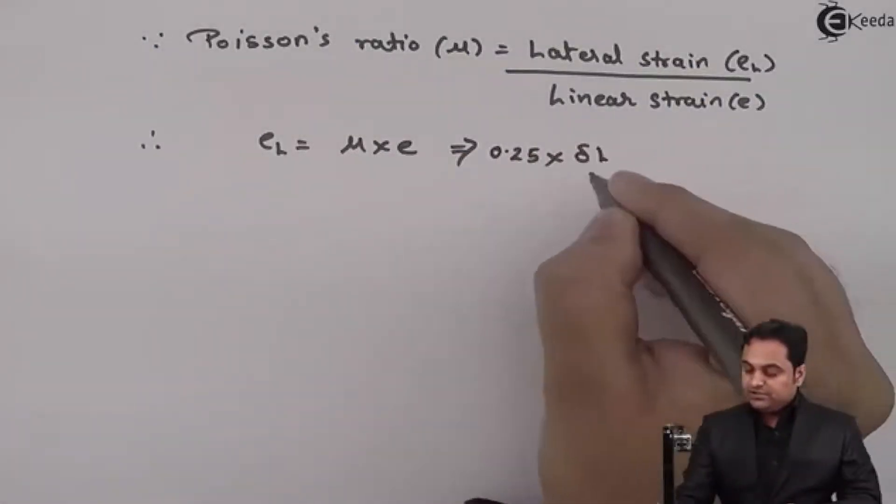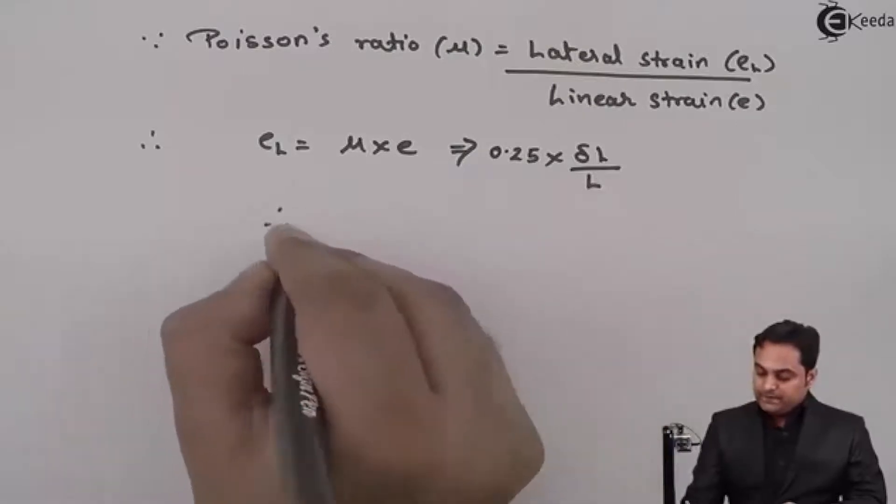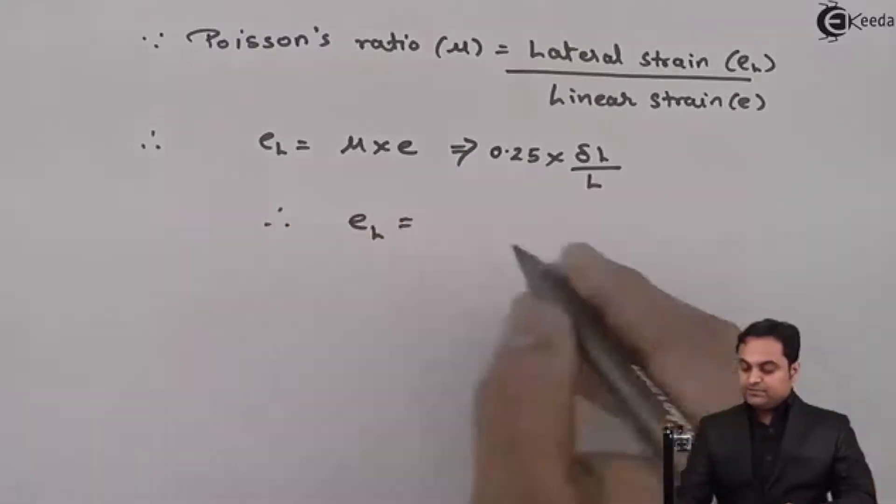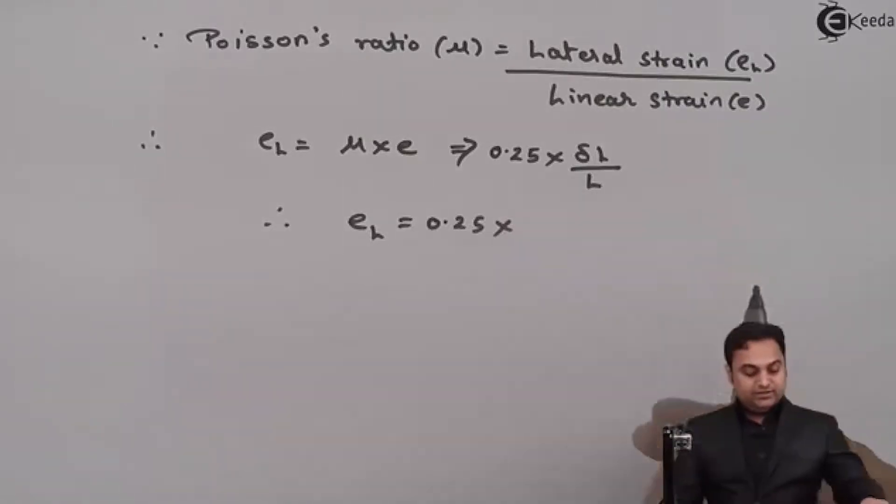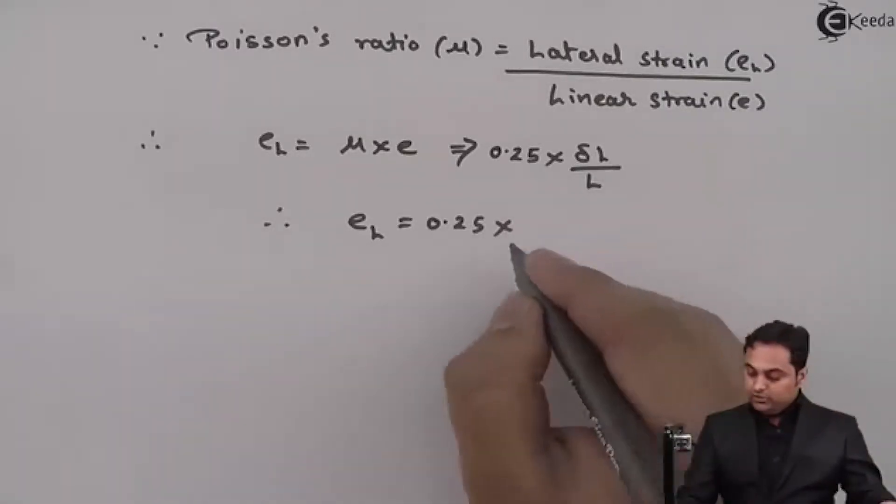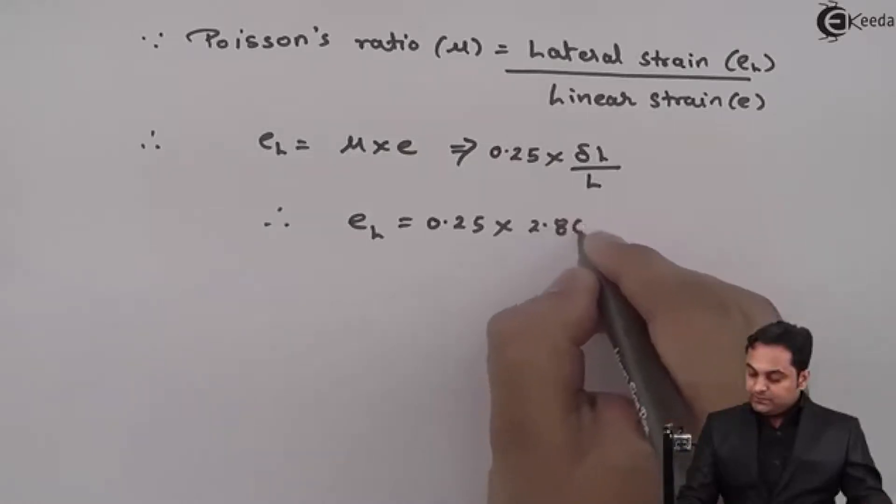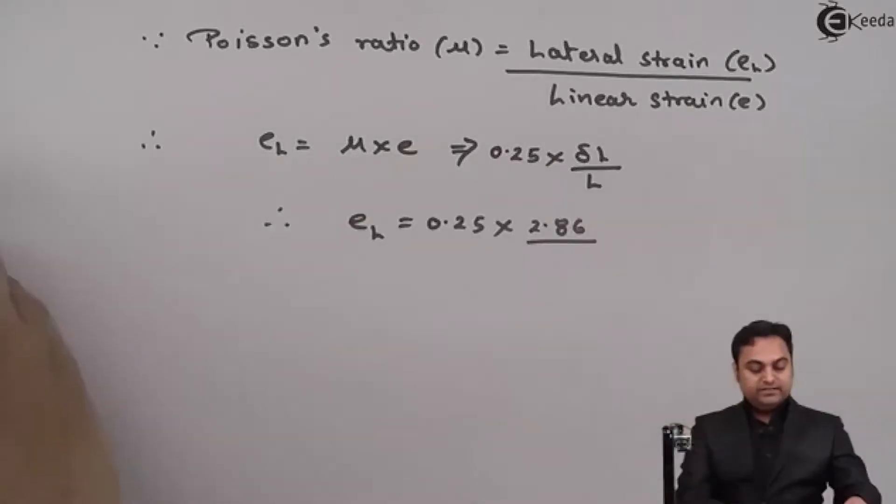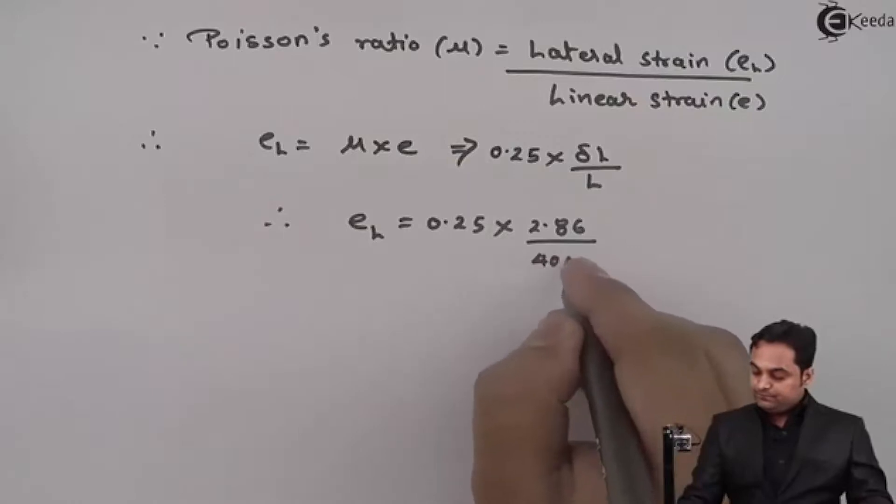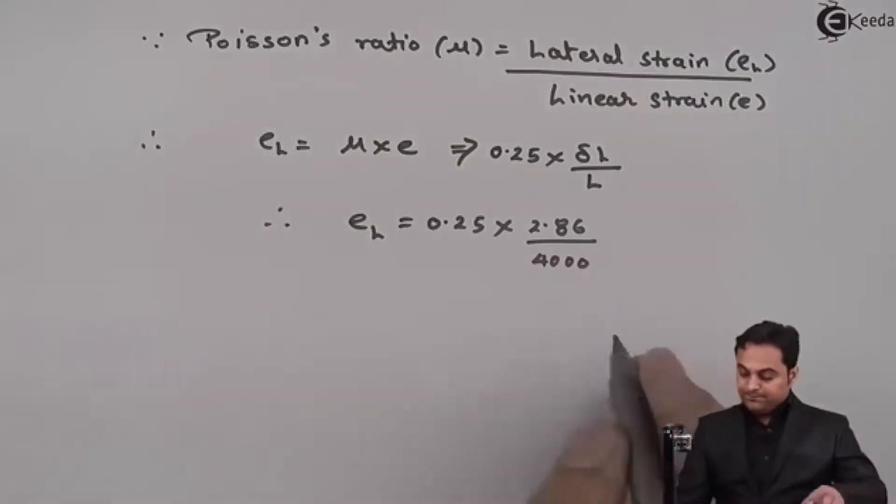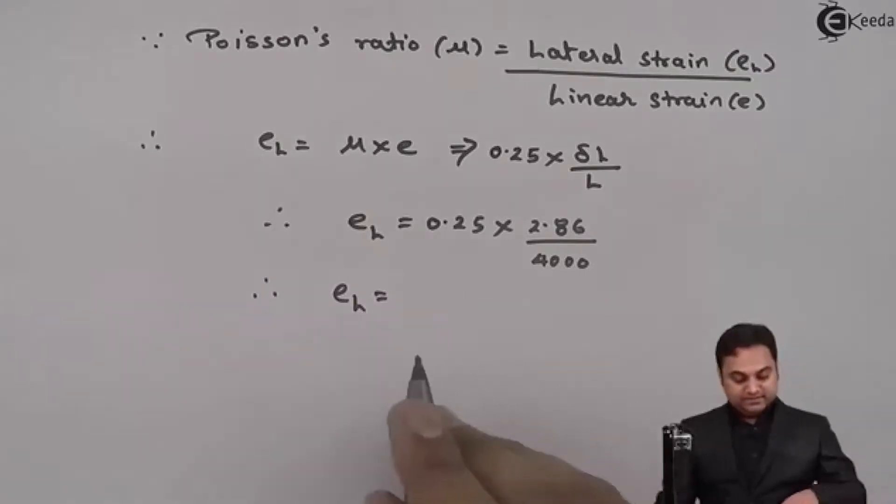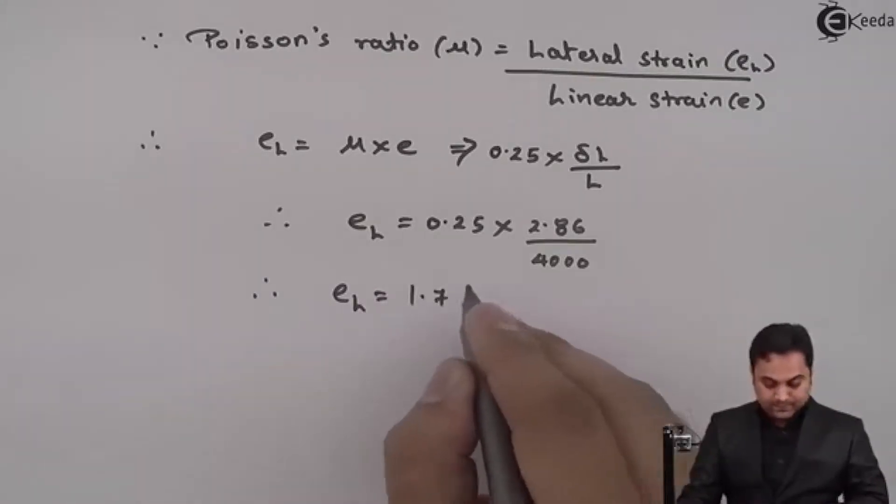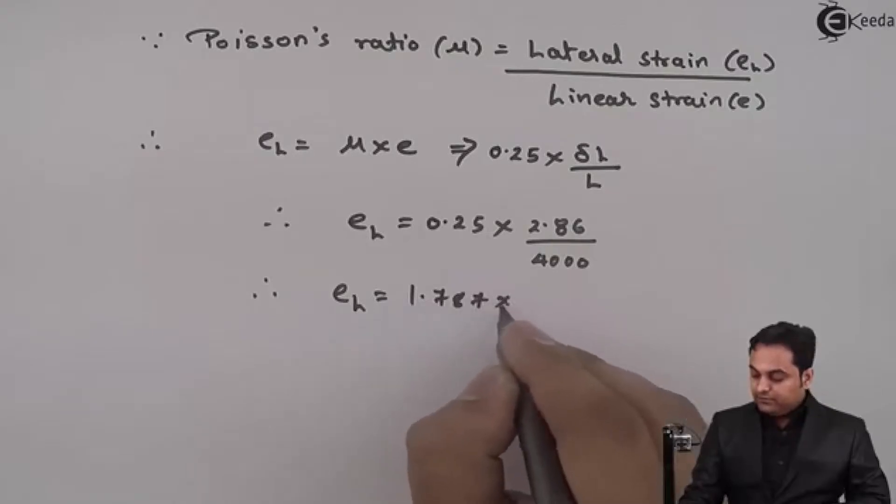So therefore lateral strain will be μ into linear strain. μ value is given as 0.25. Linear strain is change in length upon original length. So therefore lateral strain becomes 0.25 into linear strain, we have found out the deflection here 2.86 divided by 4000. So from this I will get the value of lateral strain, and this lateral strain comes out to be 1.787 × 10⁻⁴.